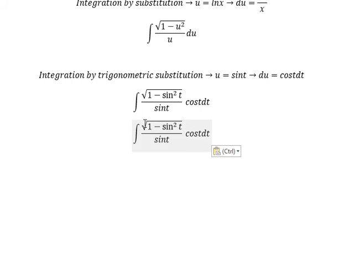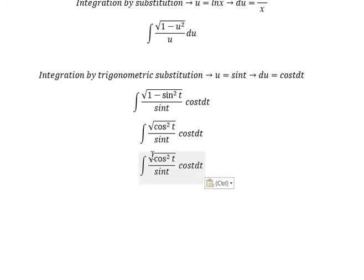The integral for the square root of 1 minus sin t squared, we change for cos t squared. The square root of cos t squared we change to cos t.